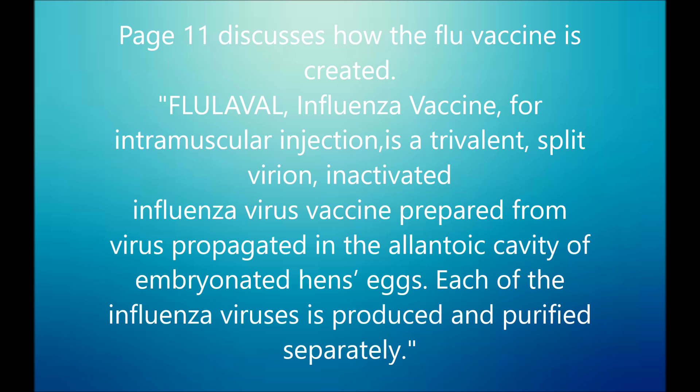There has always been lots of speculation about how flu vaccines are created, and page 11 actually discusses this. It says that flu label influenza vaccine for intramuscular injection is a trivalent split virion inactivated influenza virus vaccine prepared from virus propagated in the allantoic cavity of embryonated hens' eggs. Each of the influenza viruses is produced and purified separately.